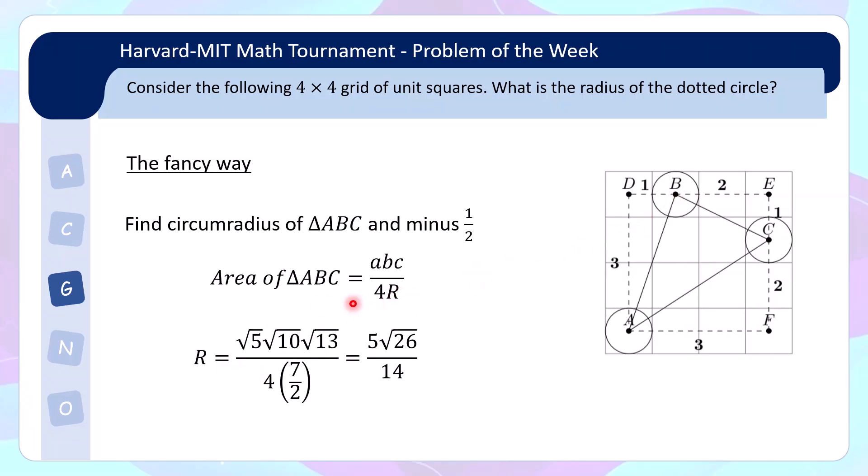So overall, we have R equals to side length product. So side length product is just using Pythagoras theorem. Square root 5, square root 10, square root 13. Then divided by 4 times the area. So this gives, the square root 5 comes out with the square root 5 gives you 5. Square root 2 and square root 13 gives square root 26. So 5 square root 26 over 14. And let's not forget to subtract half. So this is the final answer.